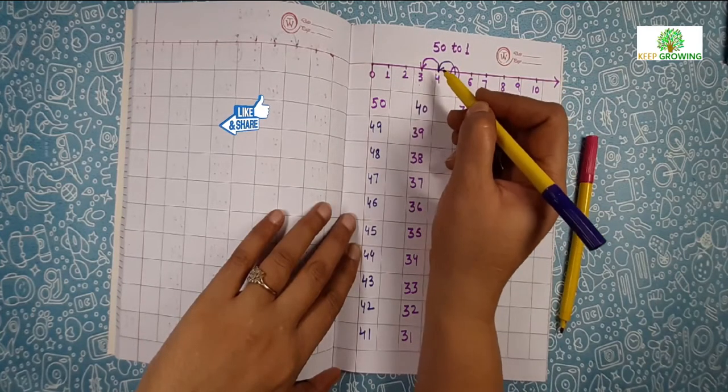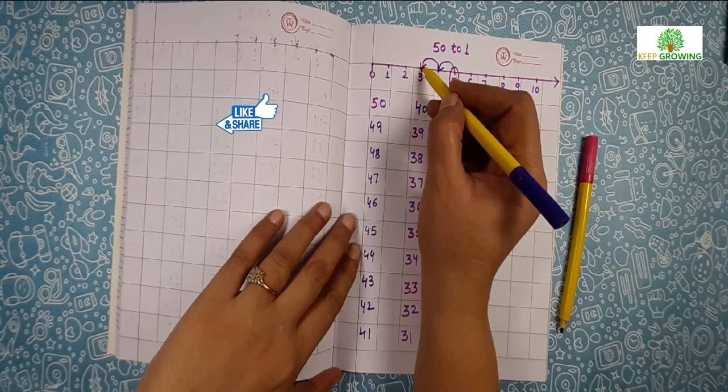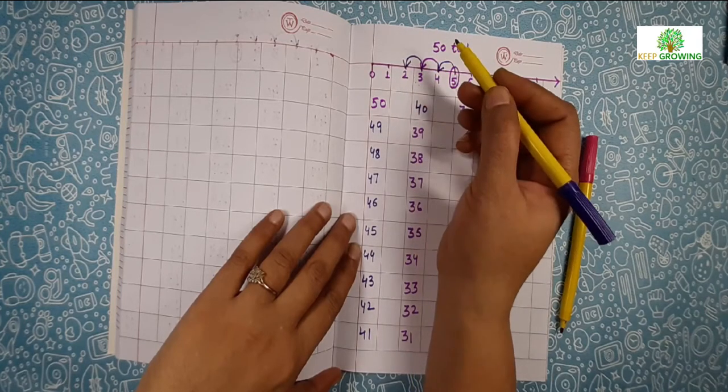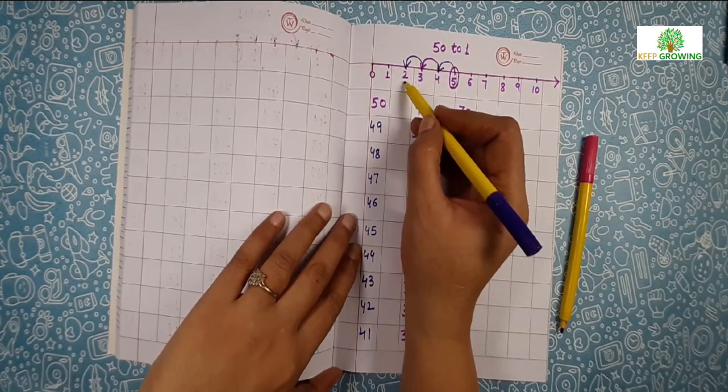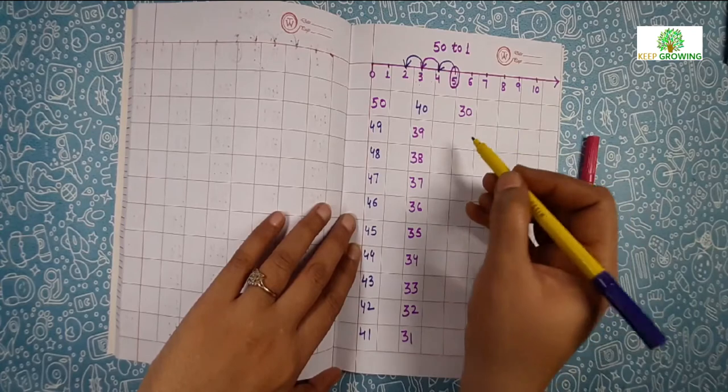Number 2 comes before number 3. You can make another small jump on number 2. Start with number 2. 2, 9, 29.